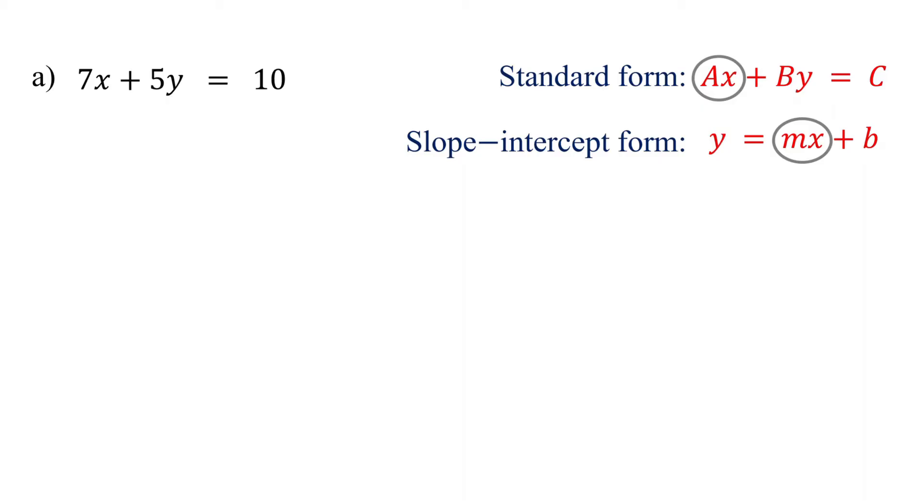So, our first step is to move the x-term to the right side. We do this by subtracting it from both sides. In our example, we subtract 7x from both sides. On the left side, these cancel out, leaving us with 5y. On the right side, we get negative 7x plus 10. Here, we write the x-term first, then the constant term, to match the slope-intercept form.